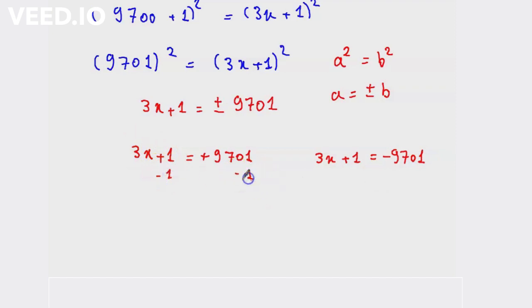Subtract 1 on both sides, so 3x equal to 9700. Divide by 3, so x equal to 9700 divided by 3.